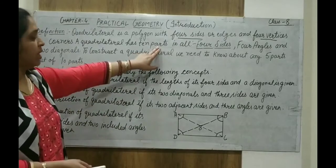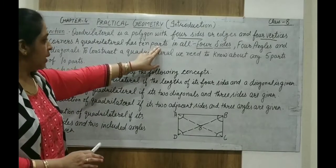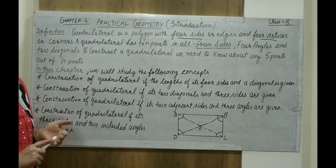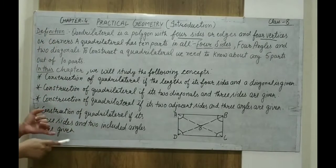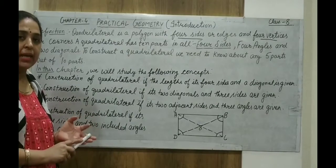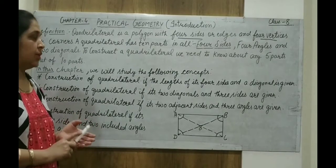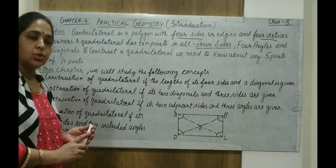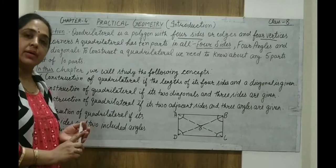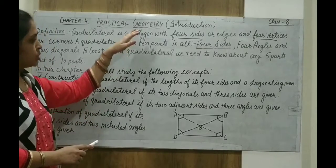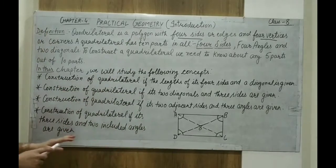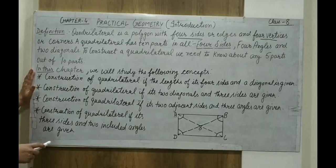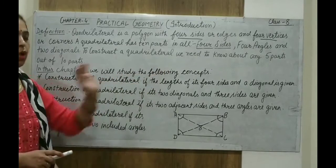In total, how many parts do we have? Ten parts. To construct a quadrilateral using geometry — using geometry equipment that is a pencil, a scale, a compass, eraser, and everything — tomorrow we start with the construction. Today we just go through the introduction. What is practical geometry actually? In this chapter, what we have to study about? We will study the following concepts.